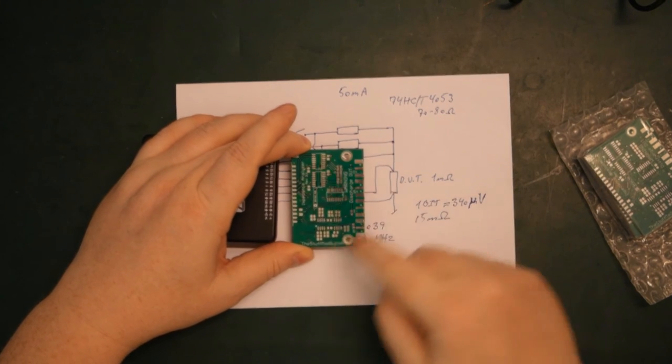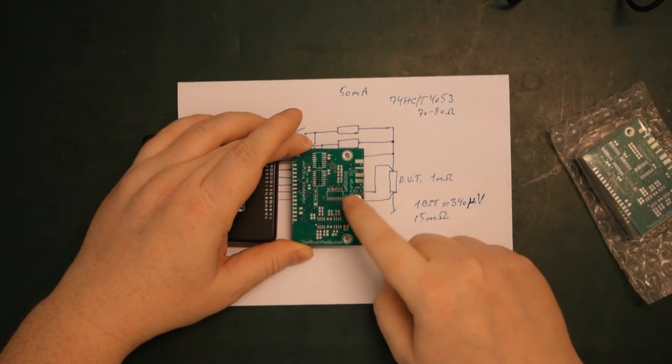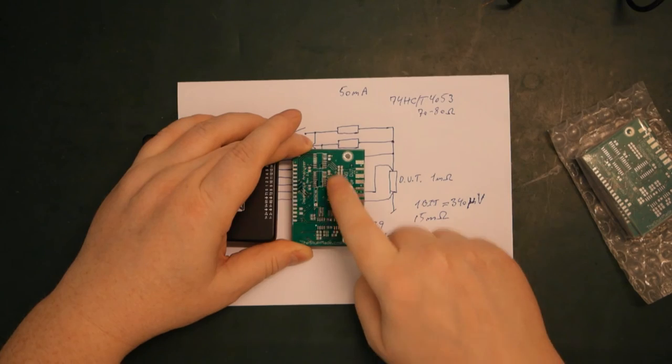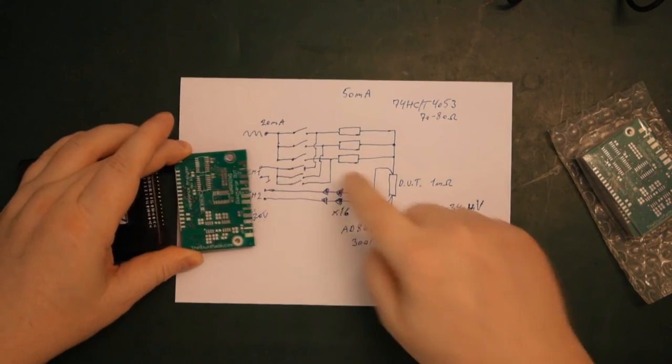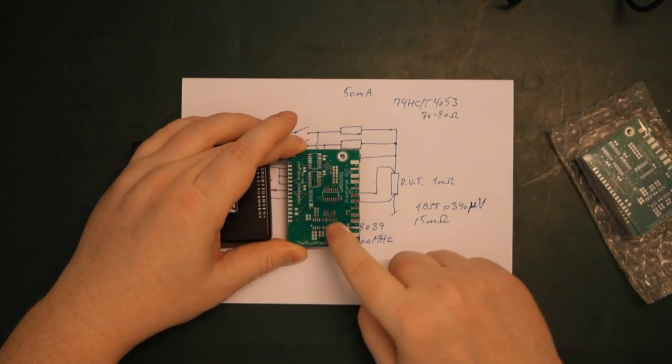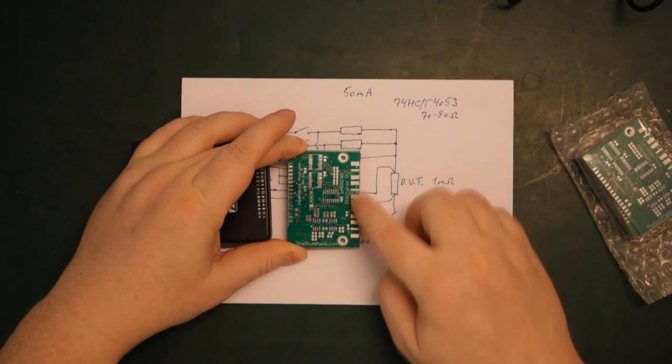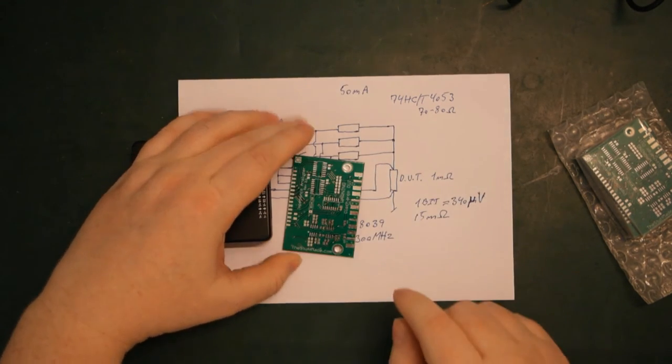So that's pretty much what we got on here. So shunt switching. This over here is for selecting the reference, and over here we have our two op-amps, and out here we have our inputs and outputs.